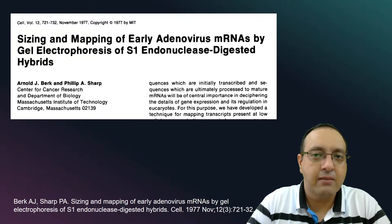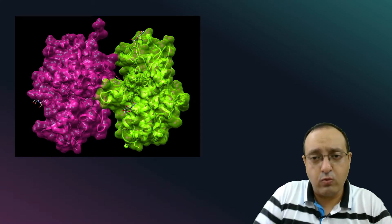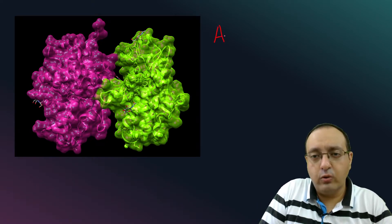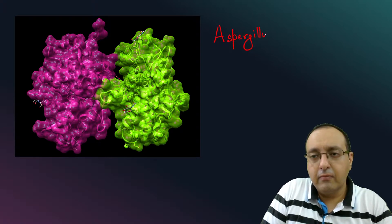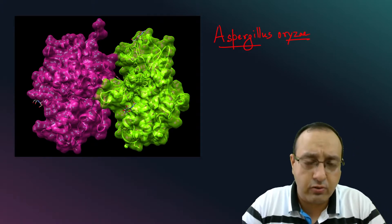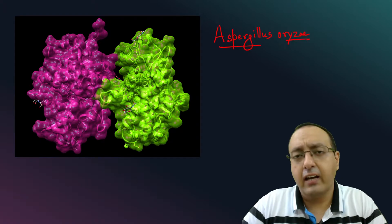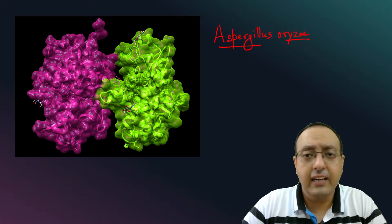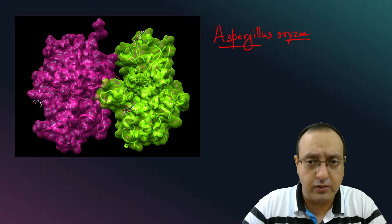The idea is pretty simple. Here is the nuclease S1. As I already told you, it is isolated from Aspergillus oryzae. It's a fungus and under conditions of high ionic strength and very low pH, and if it is provided with some zinc ions, it can degrade single-stranded DNA and single-stranded RNA pretty efficiently.